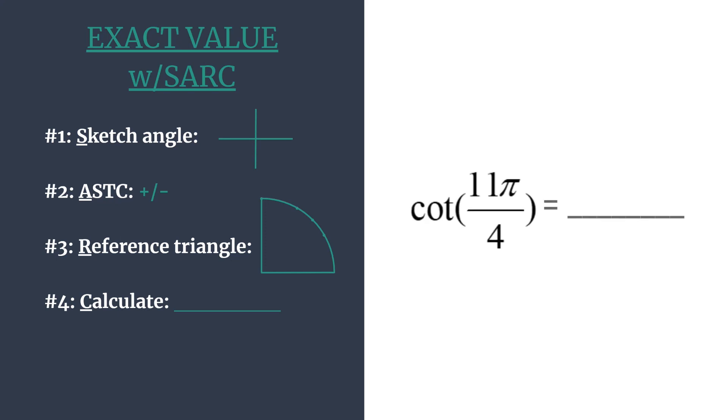We're going to do this for the cotangent of 11 pi over 4. Looking at this angle, notice that it is more than one rotation around a unit circle, so it's greater than 2 pi. In order to sketch our angle's terminal side, it's going to be helpful to find an angle that is coterminal to 11 pi over 4 — meaning it shares the same terminal side with less rotation, so we'll be able to more easily sketch it.